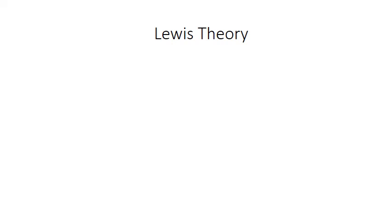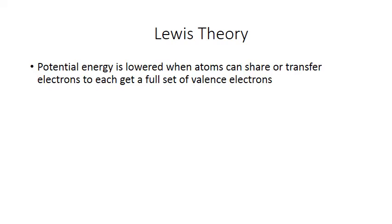We now know that chemical bonds form because the potential energy is reduced between charged particles and the atoms involved during bonding. Lewis' theory helps us predict what type of structures will result in a reduction in potential energy. In particular, it states that the net potential energy is lowered between atoms when they can share or transfer electrons to each get a full set of valence electrons.